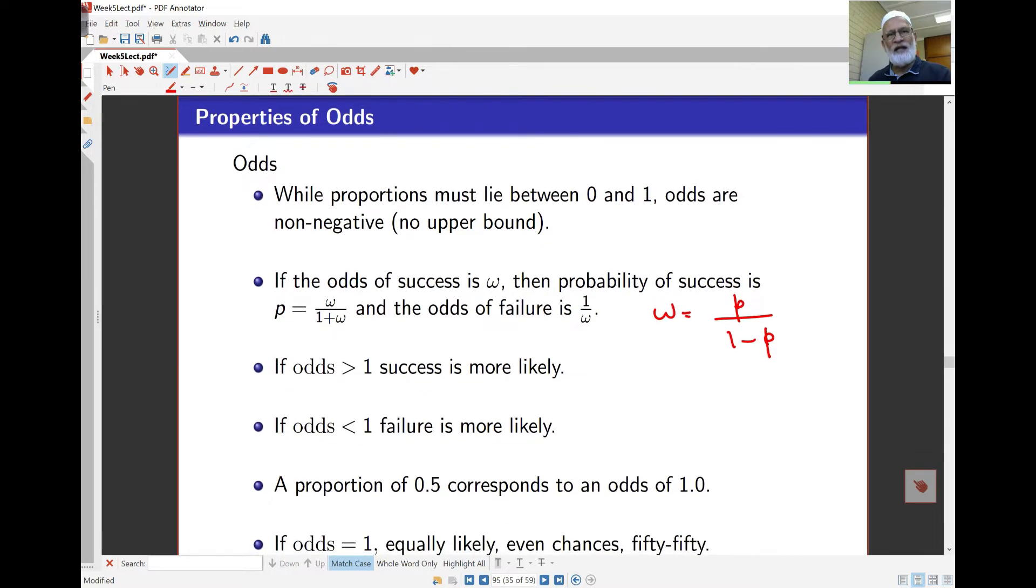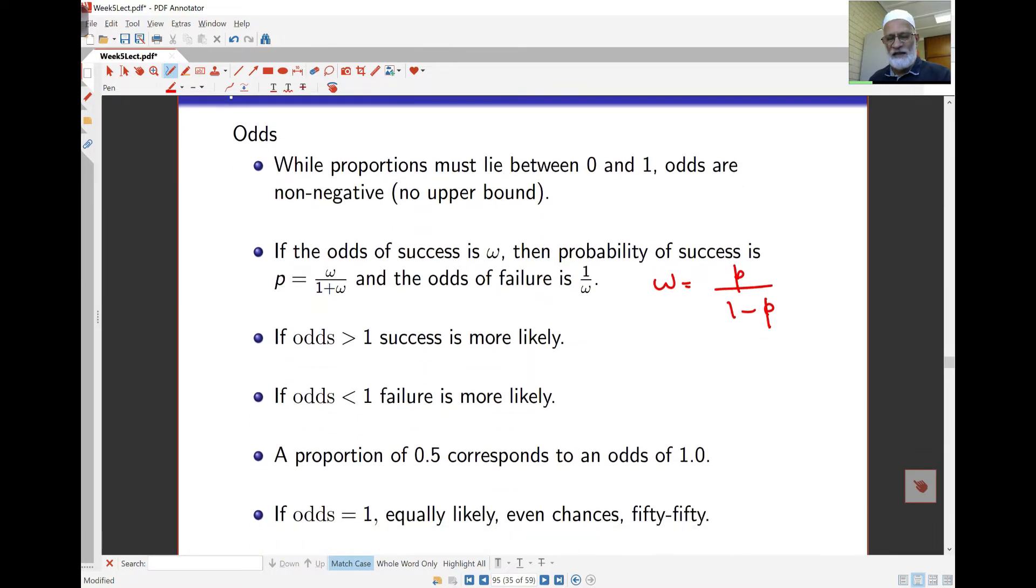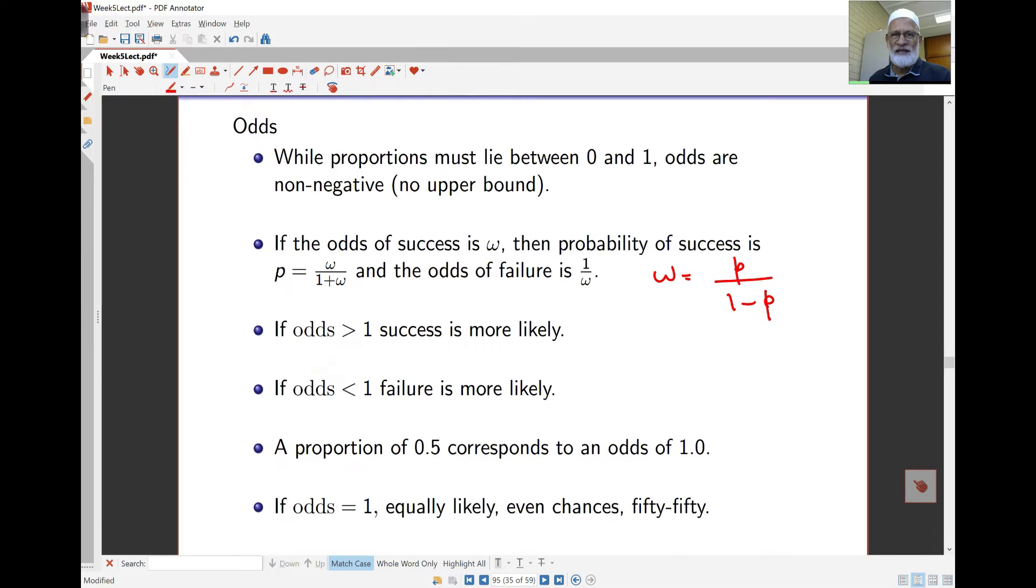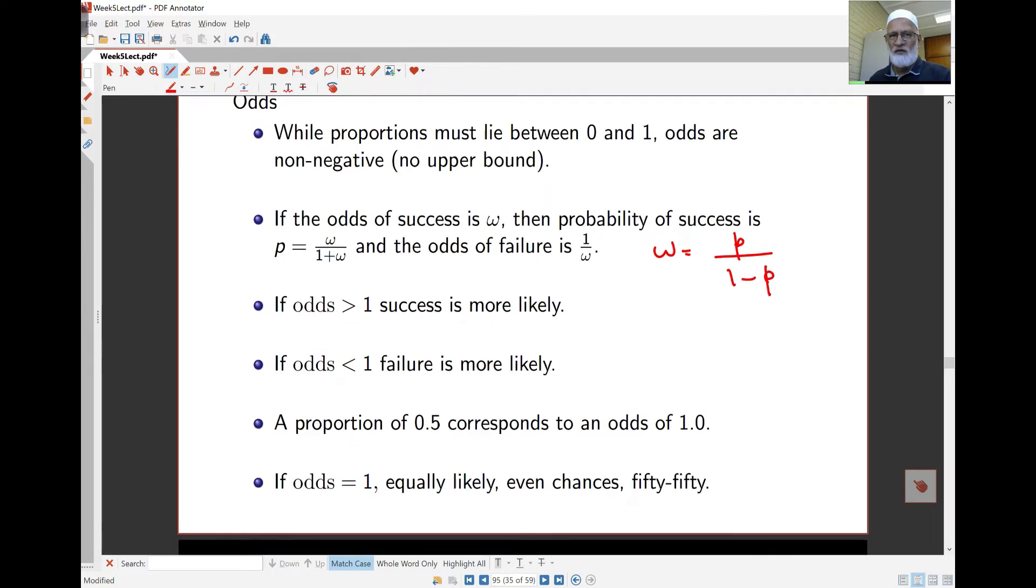If odds is bigger than 1, that means success is more likely. If odds is less than 1, that means failure is more likely. And as we saw earlier, probability of 0.5 corresponds to odds of 1.